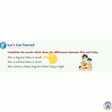Shiv is big but Ashu is small. Students, we have to underline big and small, क्योंकि इस sentence से पता चल रहा है कि जो शिव है वो बड़ा है और आशू शिव से small यानी छोटा है। Big, small.